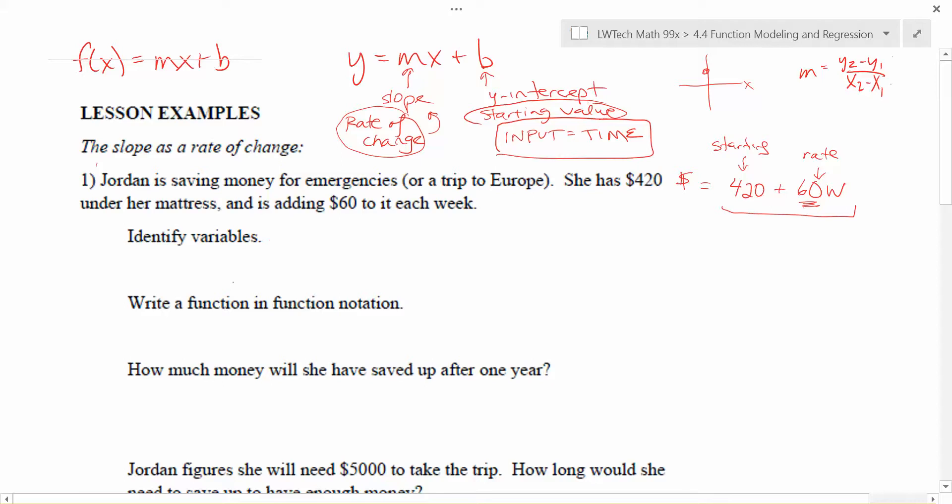Then it becomes real simple to write an equation as we go through. In these cases, the first thing that you should always do when you're writing an equation or a function of any type is to identify your variables. We're going to have an input variable and an output variable. The input variable is almost always time. So in this case, our input variable is going to be the number of weeks she's been saving. The output variable is what we're trying to measure. And in this case, we're trying to measure the amount of money in her savings account. And the unit here would be in dollars. Generally, I like to use x and y because that correlates really nicely with graphing, but you're welcome to use any variables that you like for your input and output variables. But it's important that you define them and very specifically define the units that are associated with it.